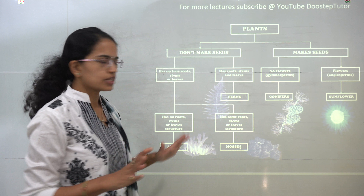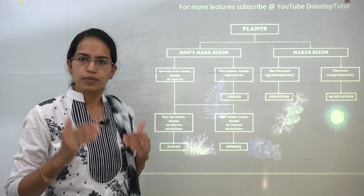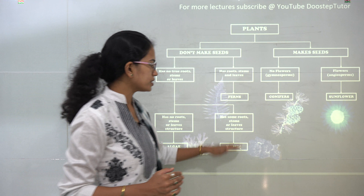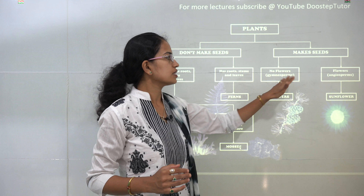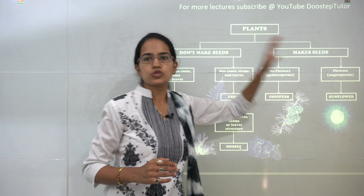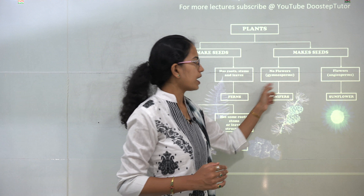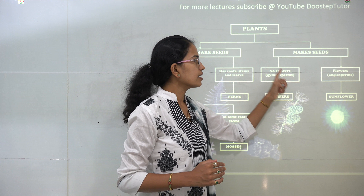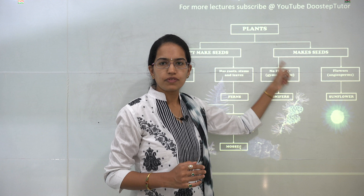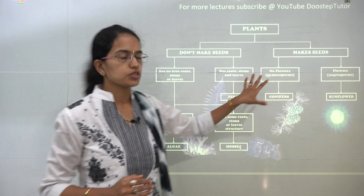Those are the five major categories under which we talk about the plant kingdom: algae, mosses, ferns, gymnosperms, and angiosperms. Today, what we would start with is the plants that make seeds but are non-flowering, which are known as gymnosperms.